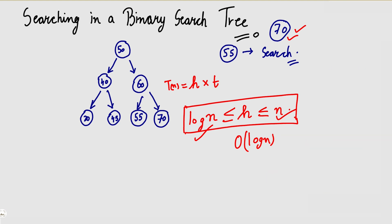Now we have seen how we can search in a binary search tree — start from the root, compare the element, and go left or right depending on whether the element is bigger or smaller than the current node. For example, searching for 2: since 2 is smaller than 50, go left; smaller than 40, go left; smaller than 20 — there is no node, so 2 is not found.